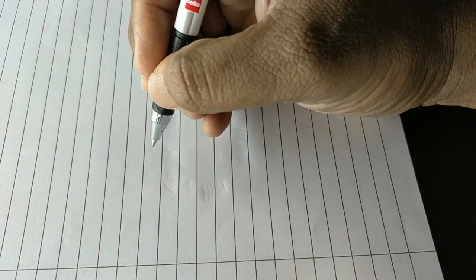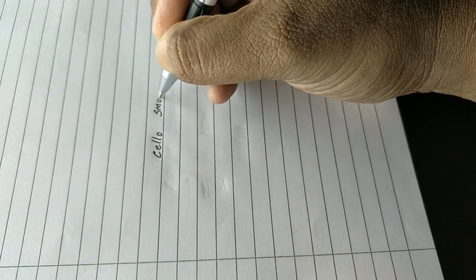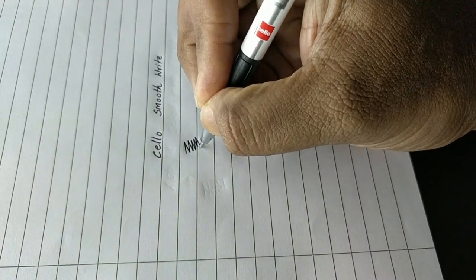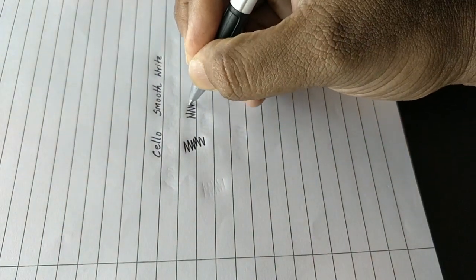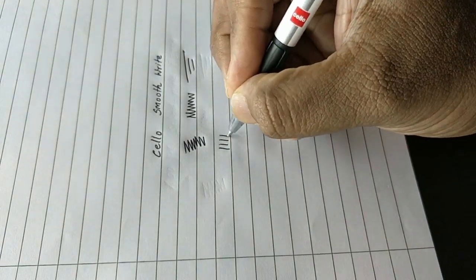Let's see how it writes. This pen writes smoothly with good impression. The color is dark. Altogether, a nice pen from Cello Smooth Write.